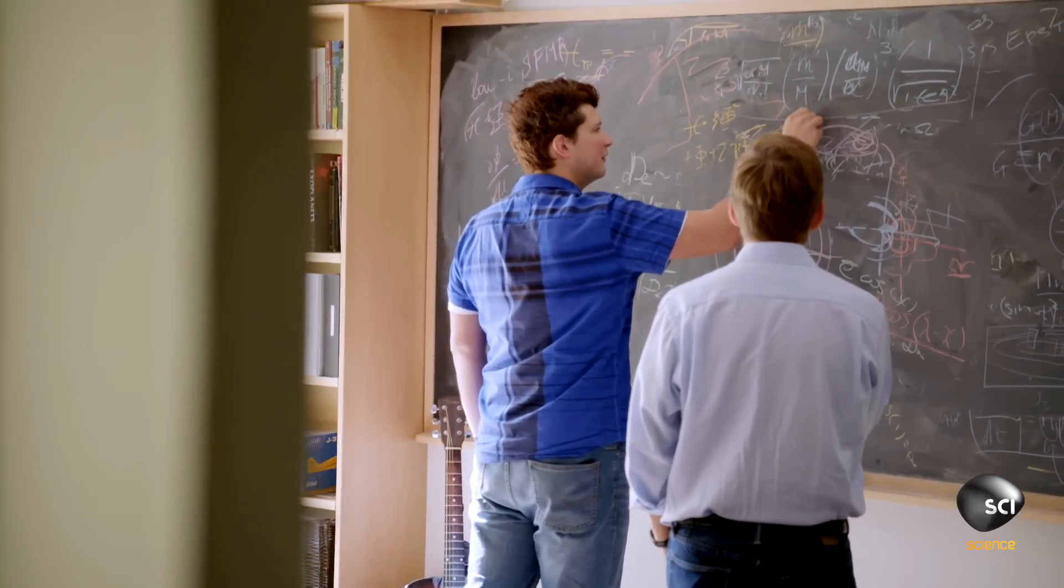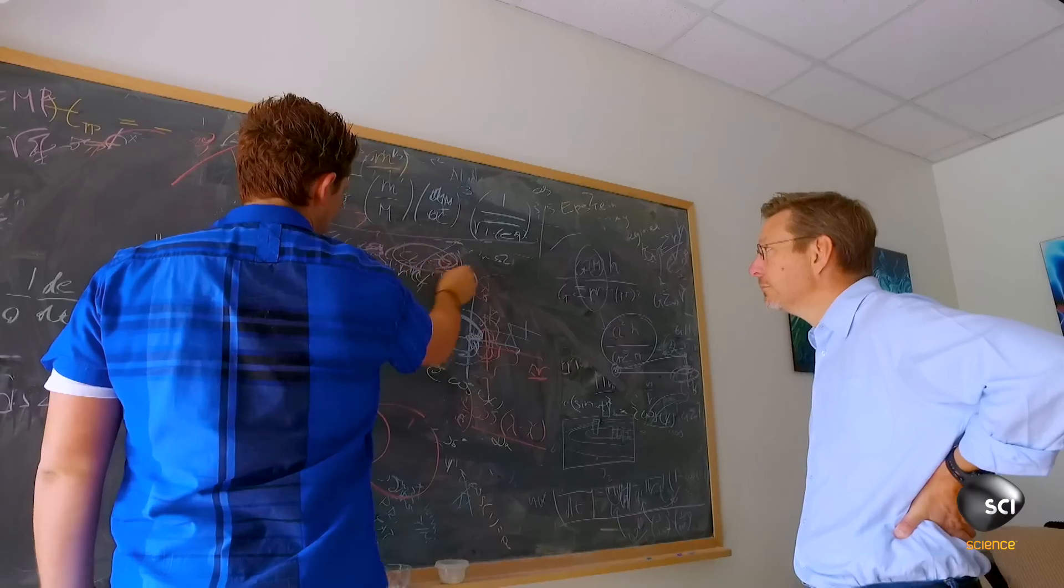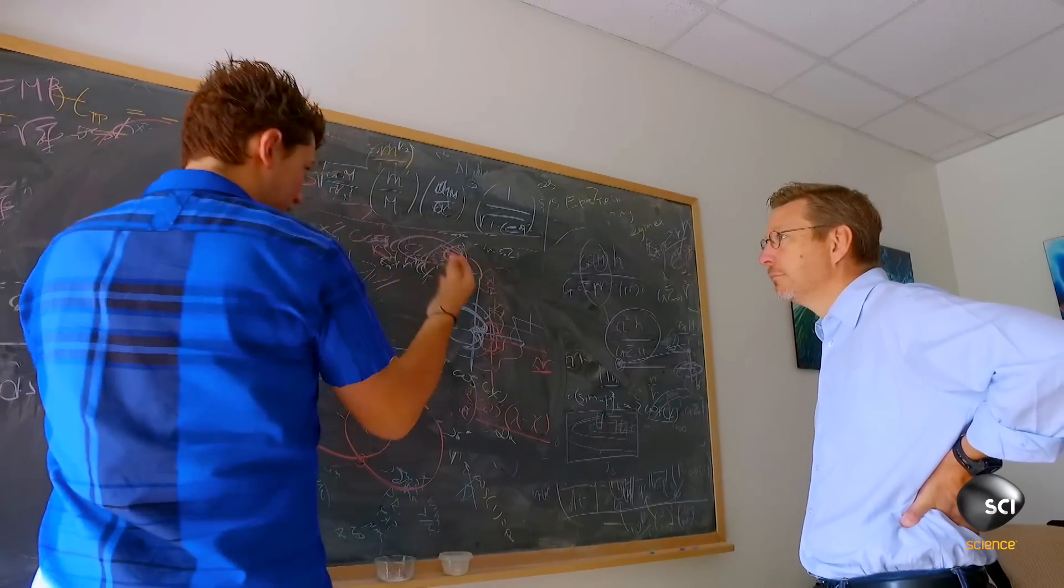Mike asks his colleague, Constantine Batygin, to run a computer simulation to see what effect a ninth planet should have on the Kuiper Belt.